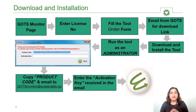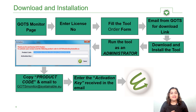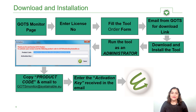Copy and paste the product code and email it to GOTS Monitor at Sustainable.eu. You will receive an activation key from Sustainable. Enter this activation key and your tool is ready to use.